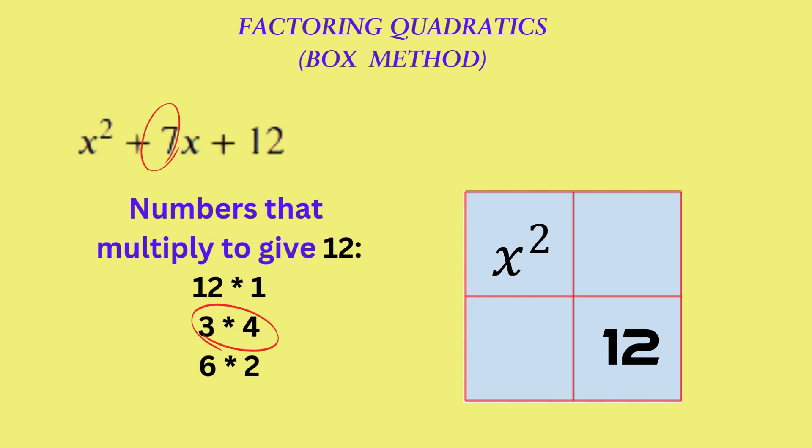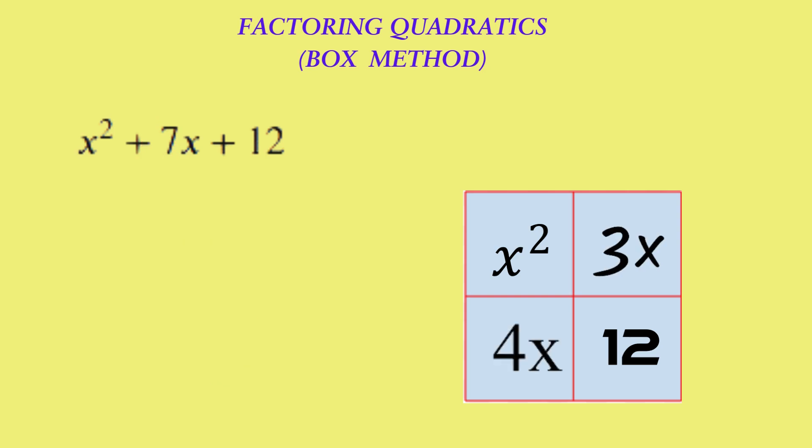So 3x and 4x will go in the other two spaces in the box. What we have essentially done is put each term from the expression in the box, except that the middle term 7x is split into two terms, 3x and 4x. Note that it doesn't matter whether we put the 3x or the 4x first, since their sum is still 7x.